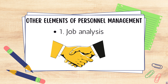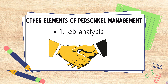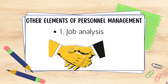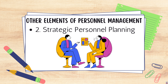Now let's go to the other elements of personnel management. Number one is job analysis — it determines how a position fits into the overall company framework, and it focuses on the role and not the employee. Number two is strategic personnel planning, which involves hiring the most qualified individual to fit a necessary role in an organization. Number three is performance appraisals — professionals in personnel management decide how often employees are assessed and the methods used to rate employee performance.